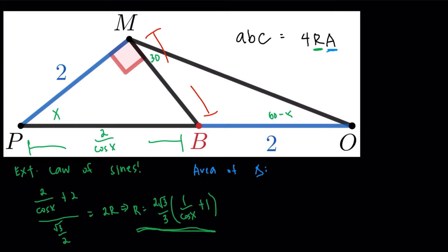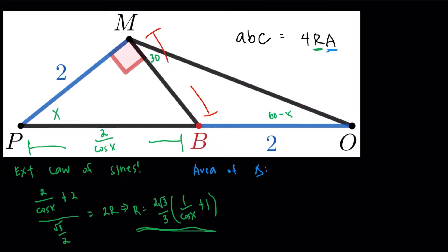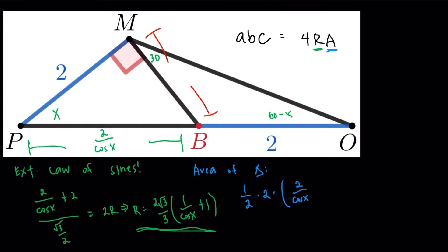For the area of the triangle, I decided to use the angle X as my theta with the formula one-half times AB times sine theta. The area becomes one-half times 2 times (2 over cosine X plus 2) times sine X. The 2s cancel nicely, and multiplying through gives the area of the triangle as 2 tangent X plus 2 sine X.